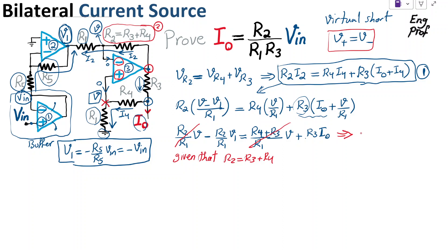So what is the outcome of this? Well, I get that minus R2 over R1 times V1 is equal to R3 times I_out. Very nice. So as a result, I can say, okay, I can say I_out is equal to minus R2 over R1 times R3 times V1.